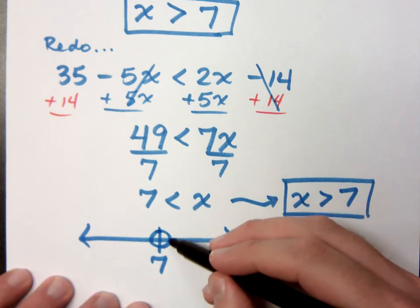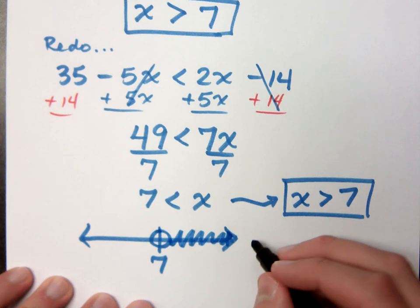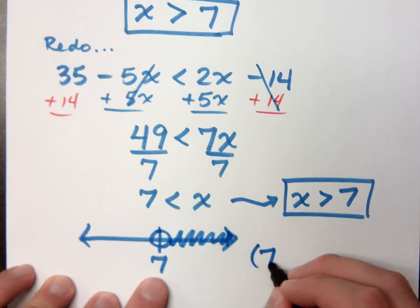x is greater than 7, so that means going out to the right. And so interval notation would be from 7 to infinity.